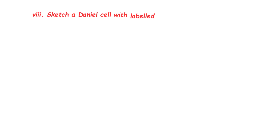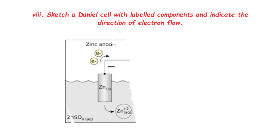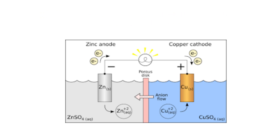Short Question 8: Sketch a Daniell cell with labeled components and indicate the direction of electron flow. Components: zinc electrode (anode), copper electrode (cathode), salt bridge, zinc sulfate, and copper sulfate solutions. Electron flow is from zinc (anode) to copper (cathode) through the external wire.